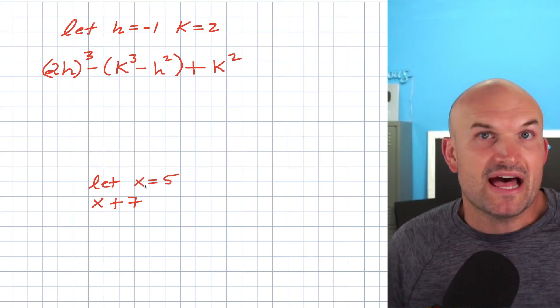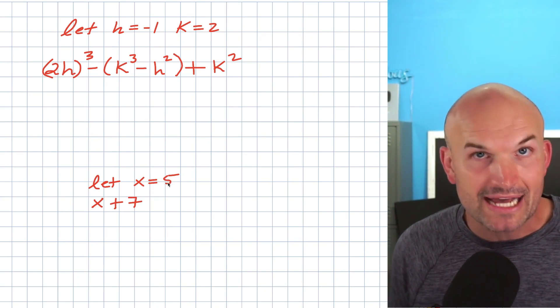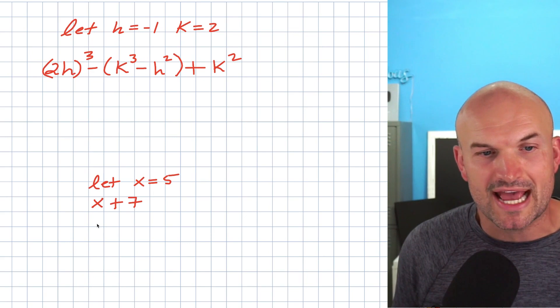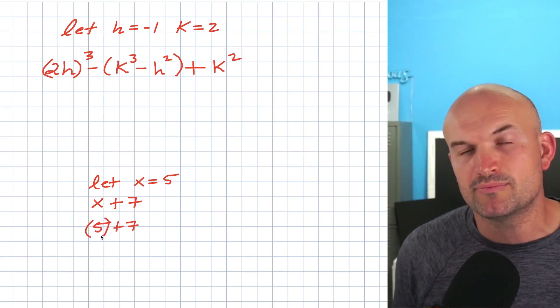So now I can replace anytime I see an X with five. So I can write this expression as five plus seven. But I don't like to write five just like this. What I like to do is put five in parentheses.